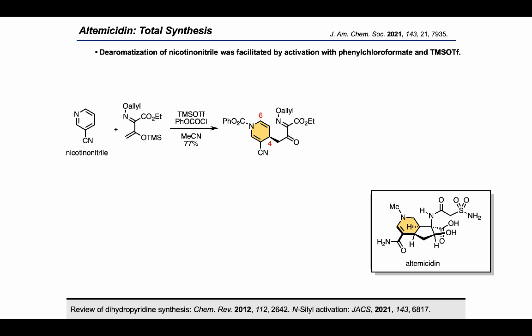In general, past literature supports the idea that TMS triflate helps to pull the reaction forward by displacing the closely associated chlorine anion with a more dissociated triflate anion to produce a more reactive pyridinium. However, ongoing work in this area has shown that in some cases direct activation of the pyridine with a silyl group may be operative. Nonetheless, we were able to isolate our desired C4 adduct in over 77% yield on multi-decagram scales.